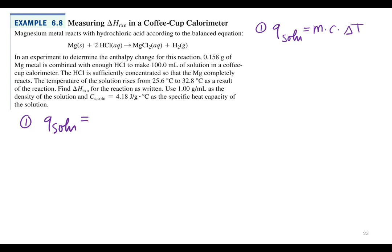So the temperature of the solution rises from 25.6. So initially we measured 25.6. Now it's at 32.8 as a result of the reaction. Find the delta H for the reaction as written. Use one gram per milliliter as the density and specific heat of solution. That's the same as water. Which is pretty if the solution is fairly dilute, you can usually use water's physical properties and get away with it. So let's do that Q of the solution. So what's M stand for again? Mass. What's the mass of the solution?